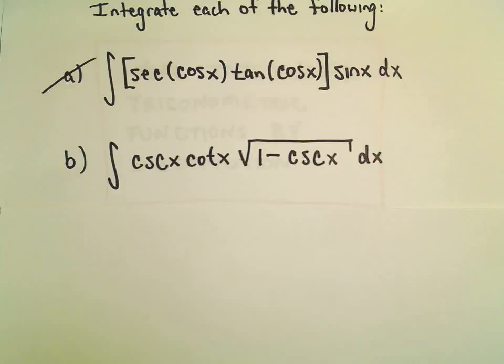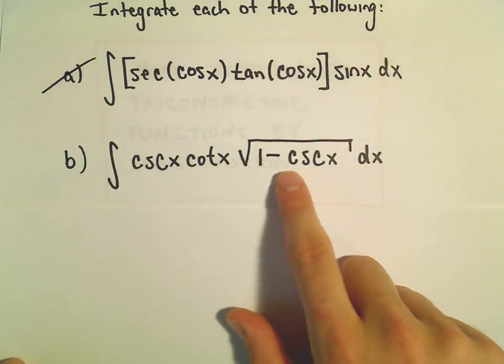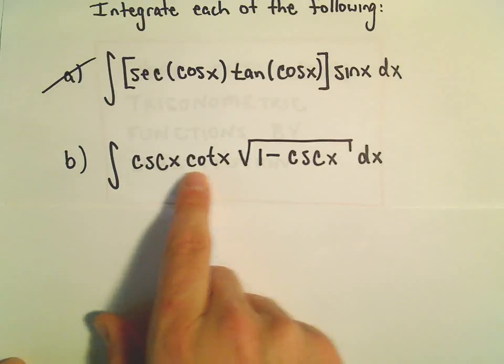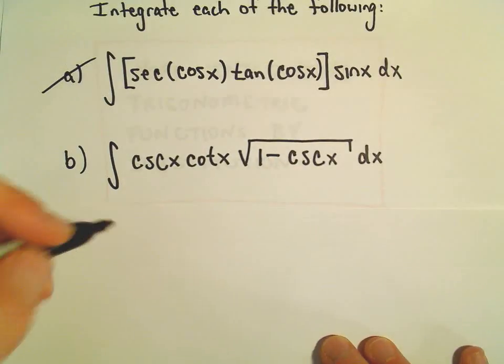So the thing that sticks out to me is the derivative of cosecant is going to be negative cosecant cotangent. So to me, I'm thinking maybe a u substitution.